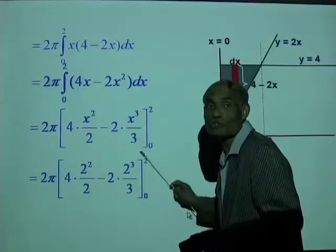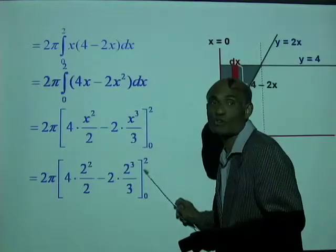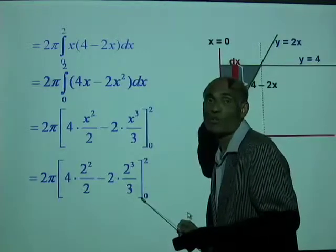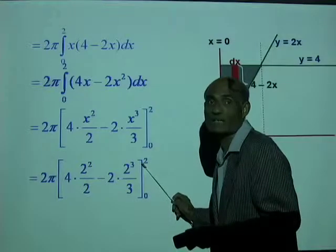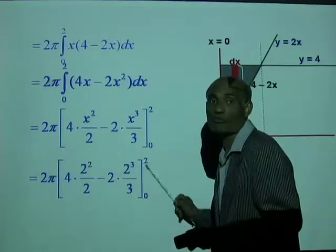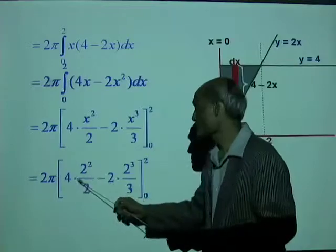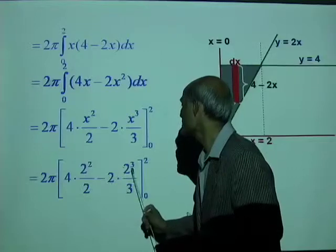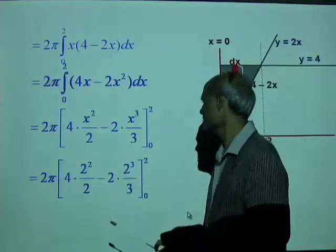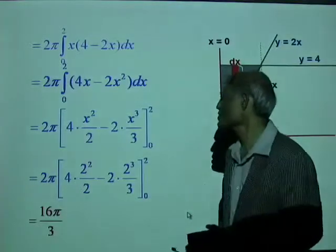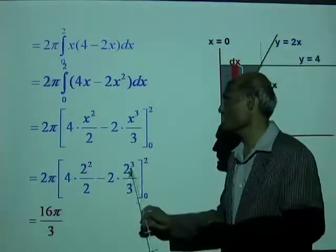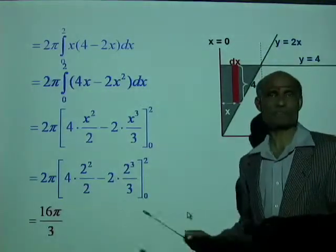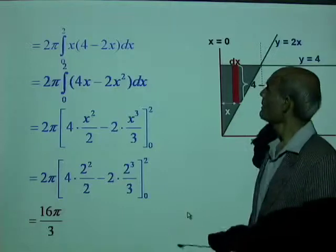Simplifying: 8 − 16/3 = (24 − 16)/3 = 8/3. Multiplied by 2π gives 16π/3. Verify this on your own to make sure it is correct.